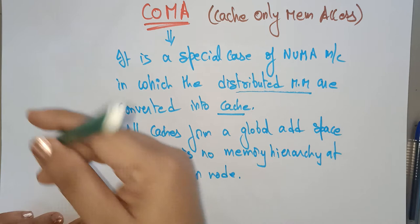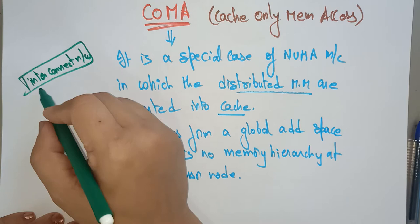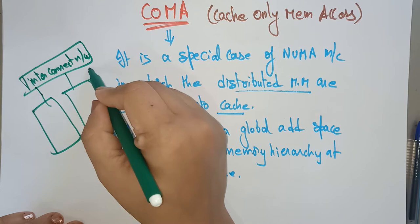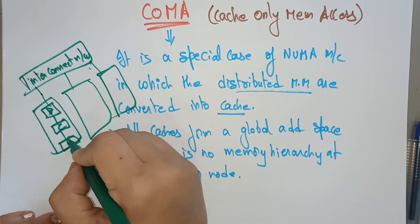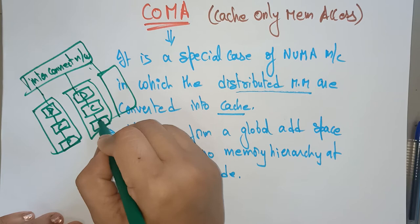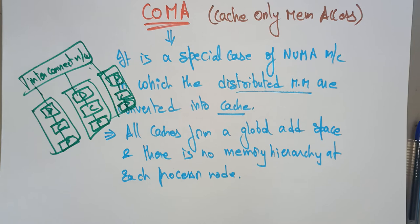If you look at the diagram: there is an interconnection network — crossbars, multi-stage networks, and so on — connecting to each processing element. Each processing element has its own directory, its own cache, and the processing element itself. So the structure of COMA looks like: directory, cache, and processing element at each node. That is how COMA works.